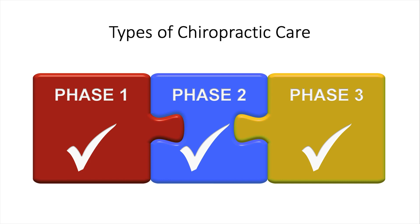So what we want to start doing is describing the type of chiropractic care that we're providing in terms of the published research. The three phases of chiropractic care in that regard are: phase one, which is the pain management phase — that's when the patient is coming in for relief.